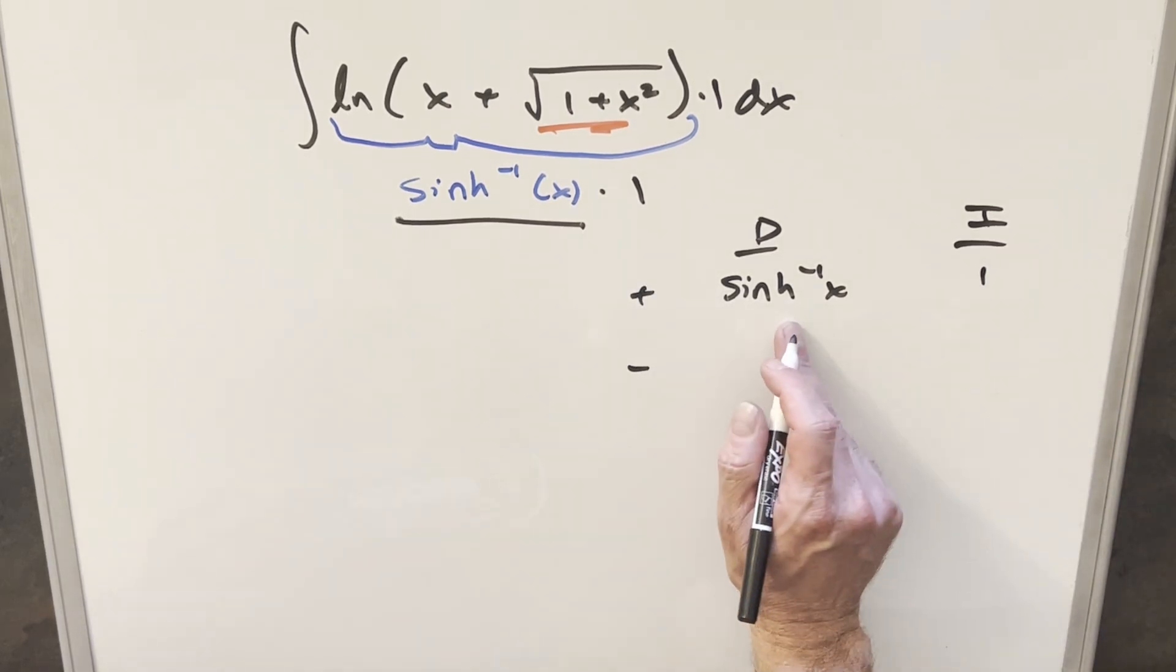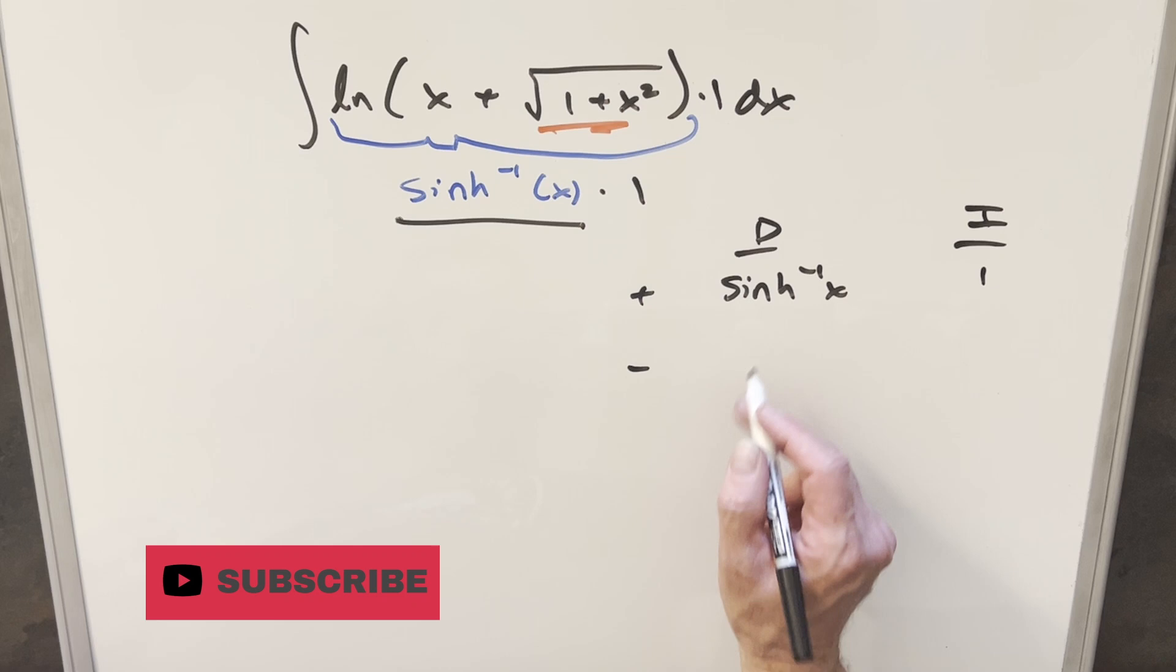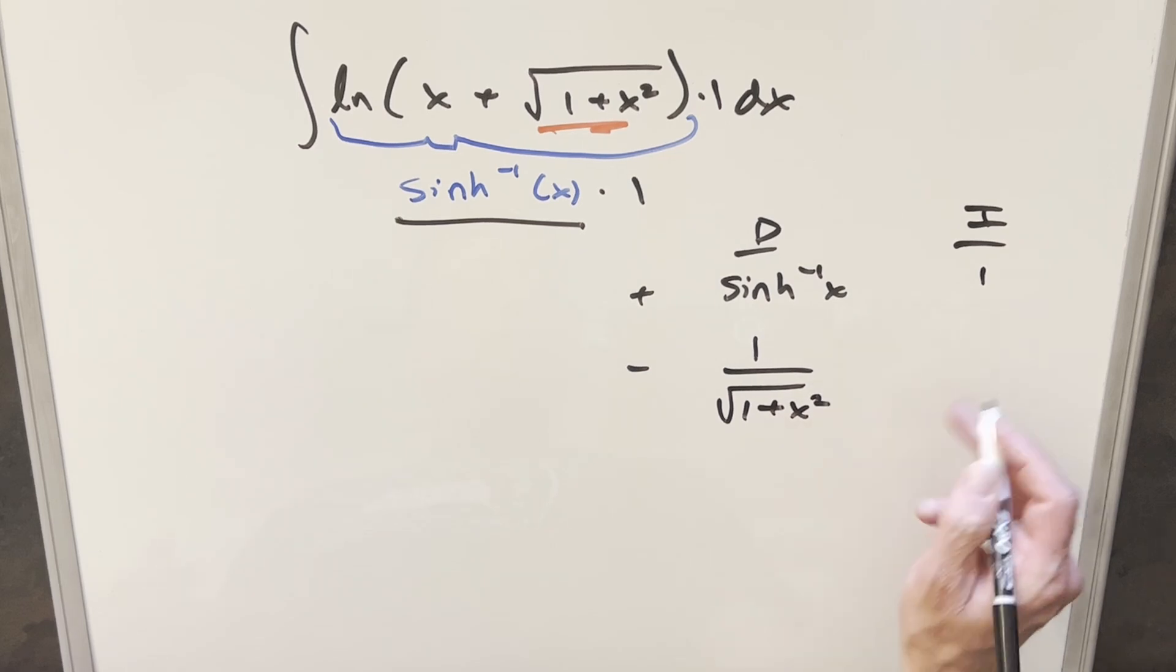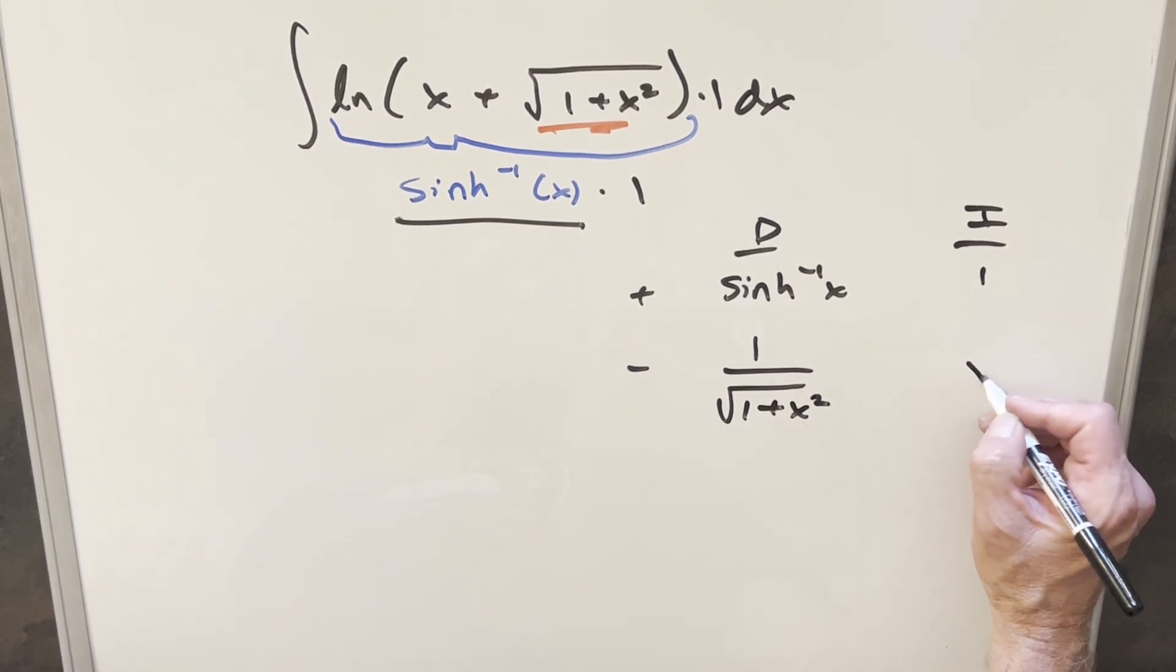And then going in and doing this, when we differentiate, this is what we just saw on the other board, which was this is going to be in reverse. It's going to be 1 over square root of 1 plus x squared. And then here, integrating this, this is just going to be x.